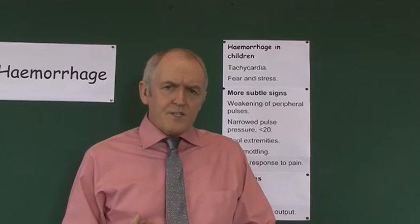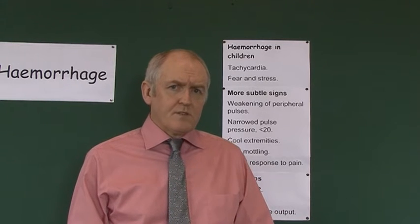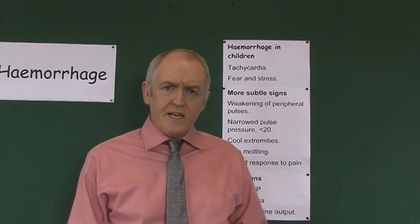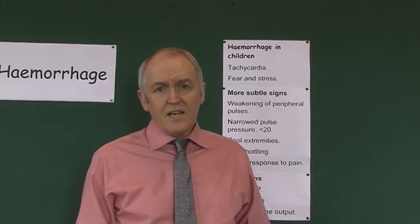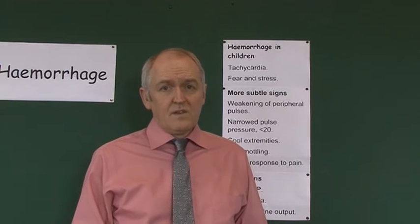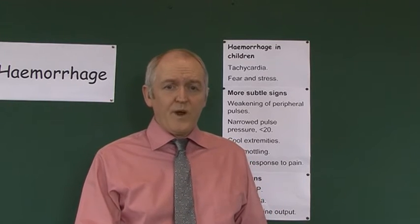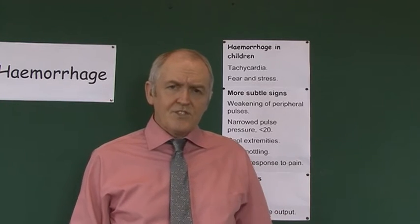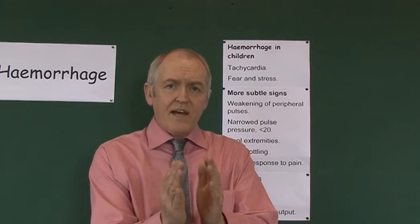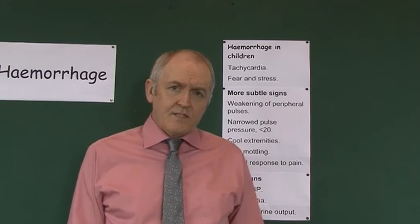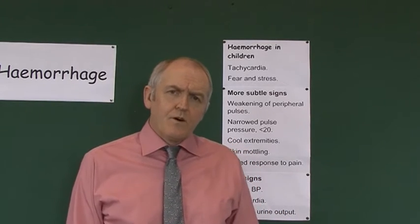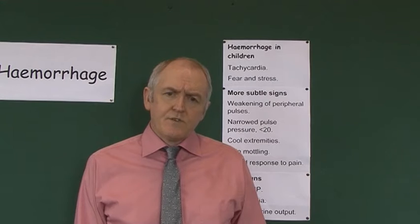There is progressive weakening of the peripheral pulses. Practice feeling normal pulses in children so you know if you're feeling a weaker one. The peripheral pulses weaken progressively as the child peripherally vasoconstricts as part of their sympathetic compensatory response.